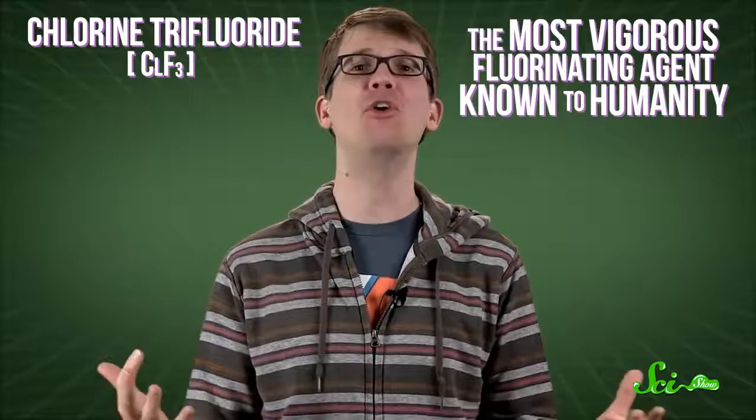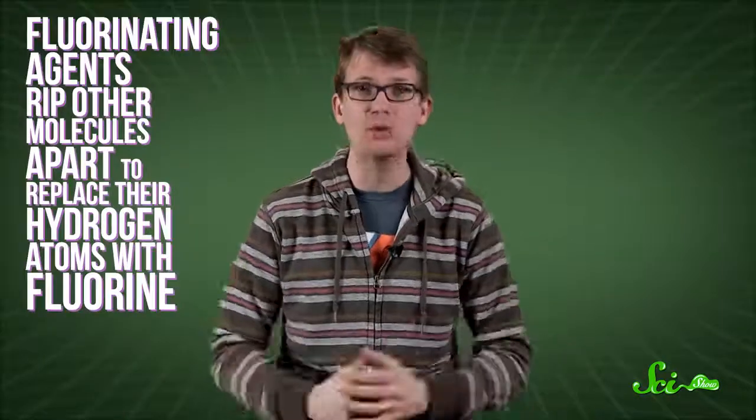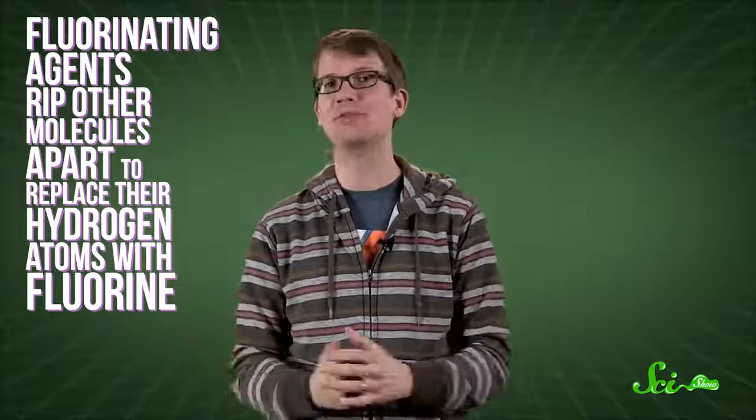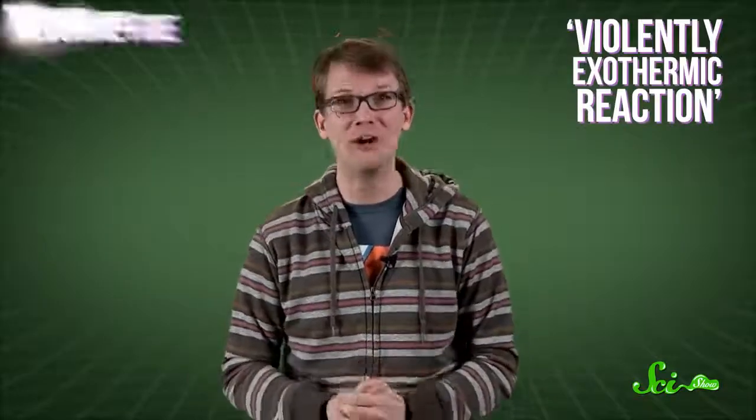Let's start with what the Germans had in that secret weapons bunker. They originally planned to produce 90 tons of the stuff every month, but only made about 30 tons throughout the whole war. What they'd concocted was chlorine trifluoride, the most vigorous fluorinating agent known to humanity. Fluorinating agents rip other molecules apart to replace their hydrogen atoms with fluorine. The result is what chemists call a violently exothermic reaction, in this case known as a fluorine fire.